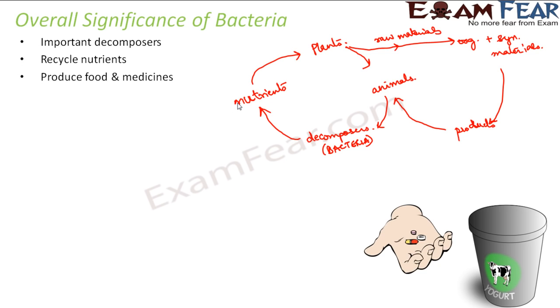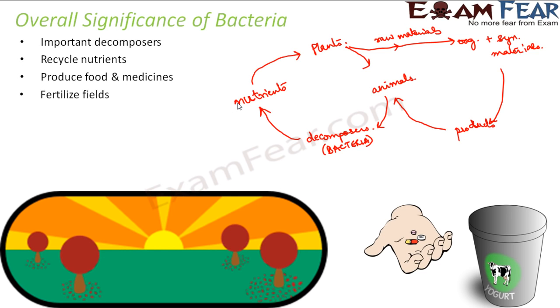Besides that, it also helps to produce food and medicines. When I say food, for example, the production of curd from milk happens with the help of lactobacillus. It helps in fertilizing the fields. During decomposition, it provides manure to the soil. When you give manure to the soil, the fertility increases. So you are fertilizing the fields. These are some of the very important roles played by bacteria for the benefit of our environment and all other living organisms.